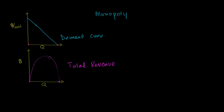From the total revenue curve, we can ask: if we increase the quantity by a very small unit, how much are we increasing our total revenue? When we do that, we're essentially calculating marginal revenue. Marginal revenue tells us how much our total revenue increases for a very small change in quantity — it's essentially the slope of this line. The slope is very steep at first, and we saw in the previous video that marginal revenue starts at the same vertical intercept as our demand curve.